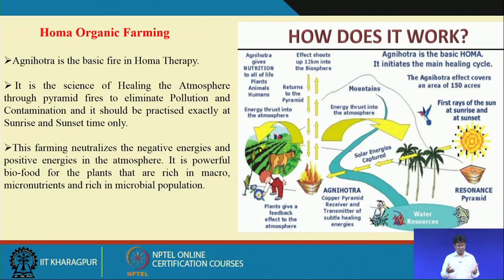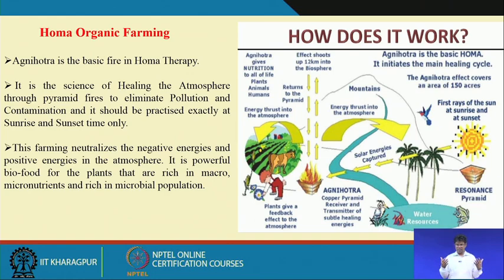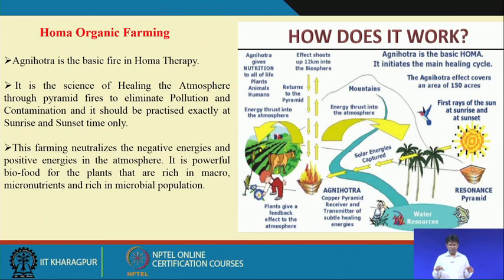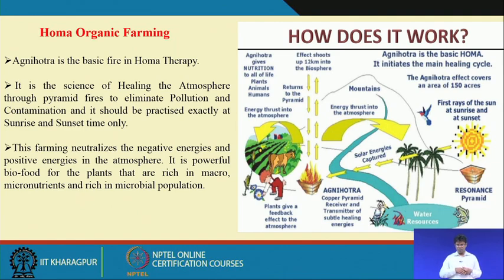In homa farming, dried cow dung cake, a small amount of raw rice and ghee are placed in a copper pyramid pot. A fire is made while chanting slogans exactly at sunrise and sunset. This creates vibrations in the atmosphere, giving through physical phenomena that help increase the solar radiation receptive capacity of plants and keep the air free from many pests and diseases.